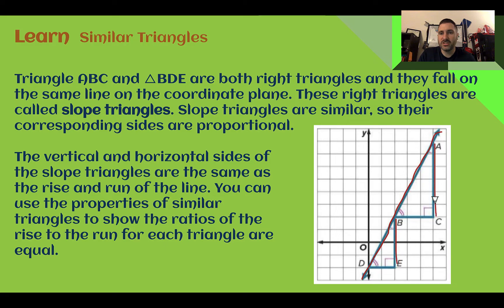The vertical, so here's our vertical sides, and our horizontal sides, they are like the rise and the run that we learned about in previous lessons for our slope. And then we can use our properties of similar triangles to show that the ratios are the same, meaning that they're going to have the same slope. So if the ratio of the sides is the same for both, then we have the same slope. Or if the ratio of the corresponding side from one to the other is the same throughout, again, we'll find that we have the same slope.